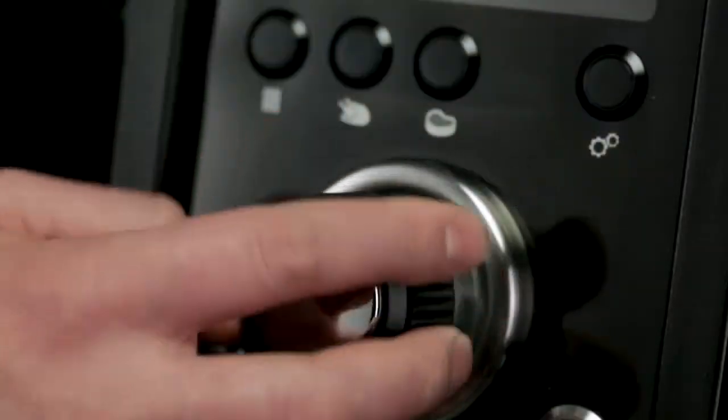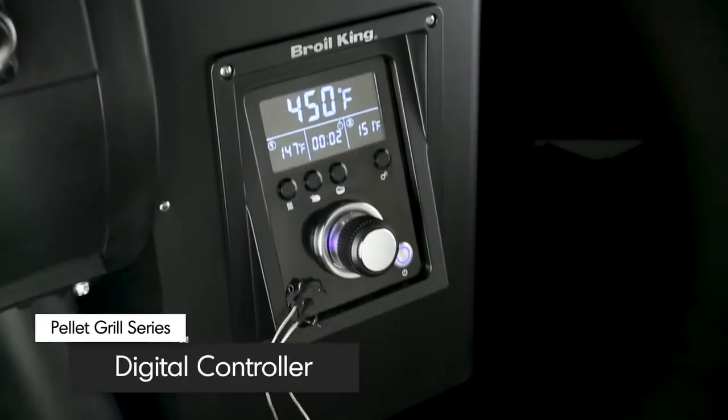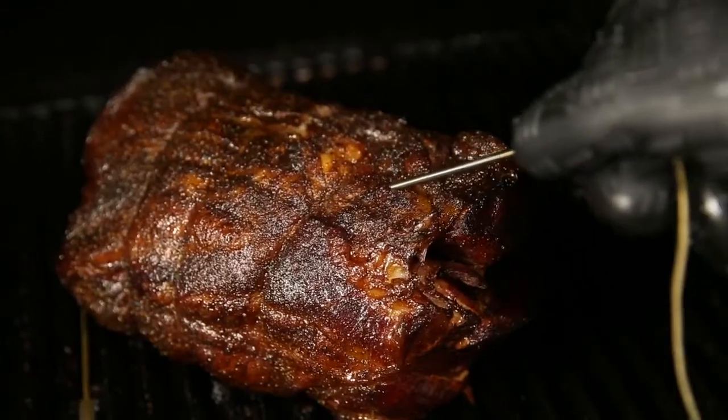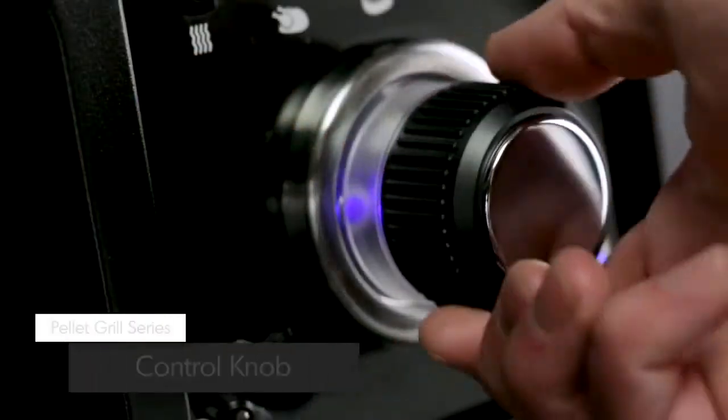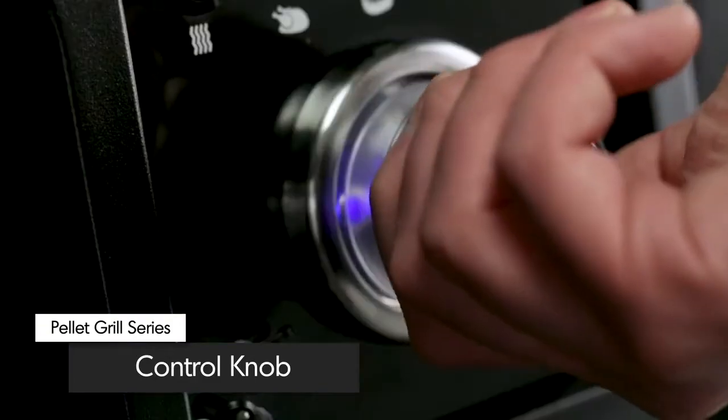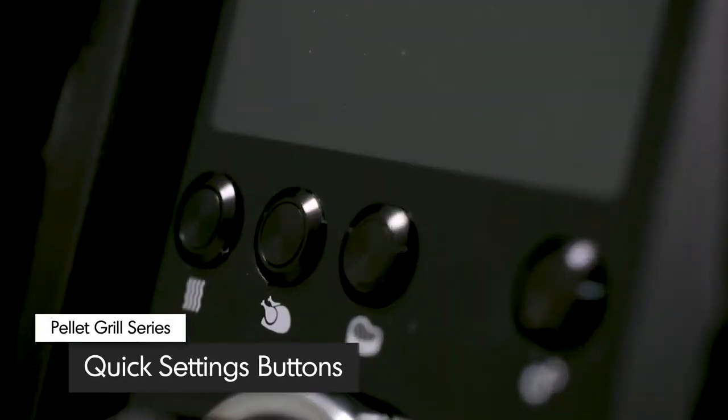Easily control the Broil King pellet with the intuitive digital control display. The large backlit LCD screen shows the target and current cookbox temperature, as well as the temperature for Probe 1 and Probe 2. The appliance style control knob allows you to dial in the precise cook temperature and lock it in with a touch. Three quick set buttons allow you to easily access the most common grilling temperatures.